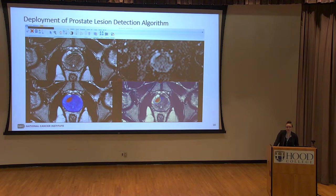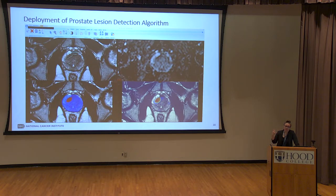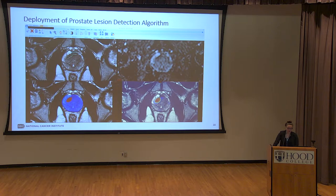For the current algorithm as deployed in PACS — this is from a patient we ran last week — we show the radiologist both the segmentation map and the probability map. This gives them spatial context and helps develop trust, combining what we learned from both previous reader studies to get better results.